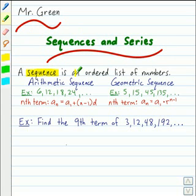A sequence is an ordered list of numbers. There are two types, arithmetic and geometric. Here's an example of each and formulas to find the nth term of each.